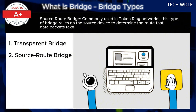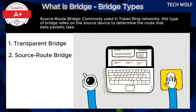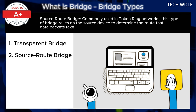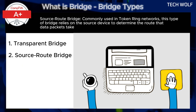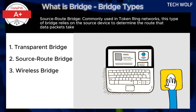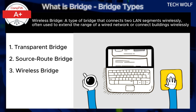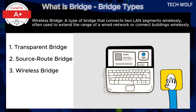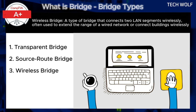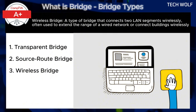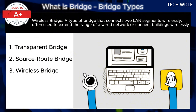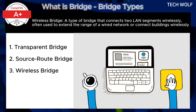The second type is the source route bridge, commonly used in token ring networks. This type relies on the source device to determine the route that data packets take. The third type is the wireless bridge, which connects two LAN segments wirelessly, often used to extend the range of a wired network or connect buildings wirelessly.